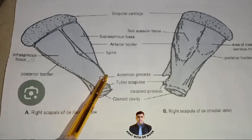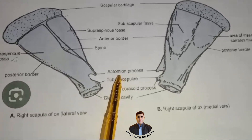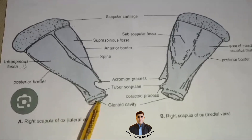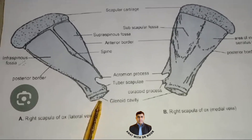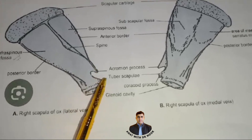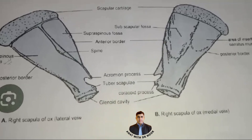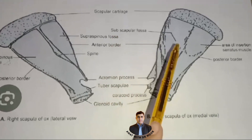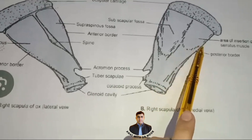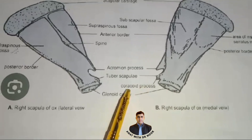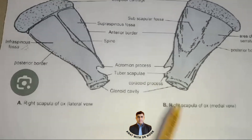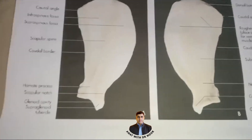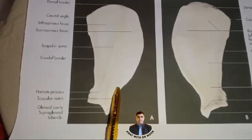Spine ke distal per ek bony projection hoti hai jahan pe humerus ka head articulate karta hai. This is called the supra glenoid tuberosity. There is also an acromion process, which has an extension of the lateral surface, and here a scapular notch is present.